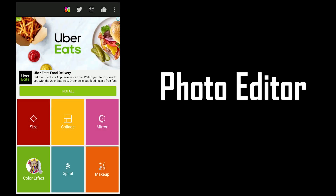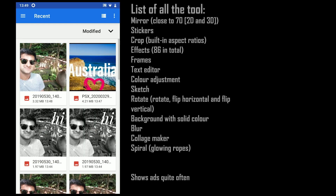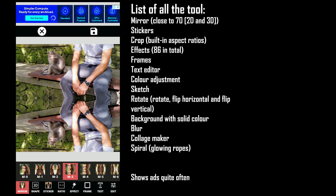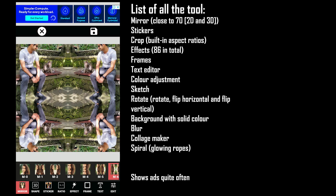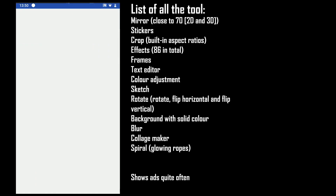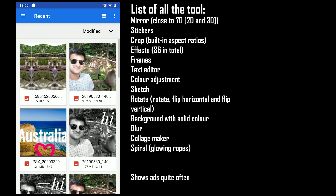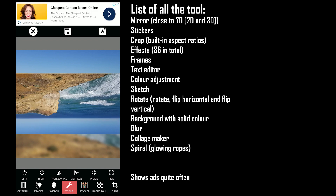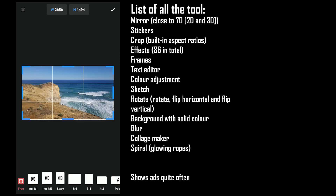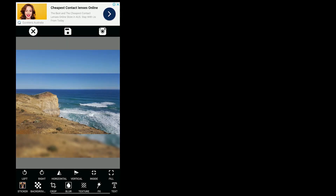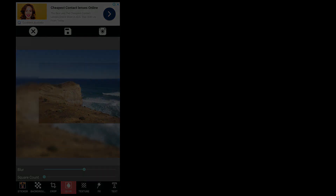Moving on, with over 100 million downloads, the app comes in the top list. It offers a couple of unique tools including the mirror with many options and the spiral tool to add glowing effects to your photos. Apart from that, you get tools including background blur, effects, text editor, filters, and sketch, which creates sketches of people in the photo. The only problem is many banner and pop-up ads, but if you don't care about advertisements then the app is a must-try.